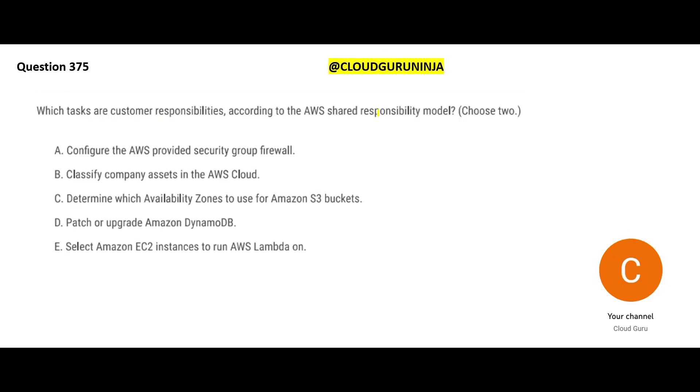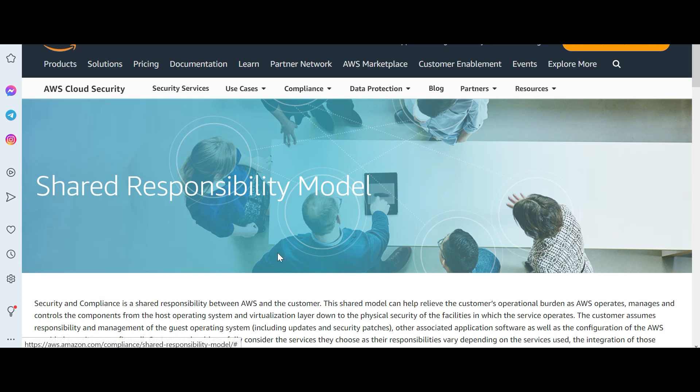Let us look at the questions: which tasks are customer responsibilities? We all know that AWS has a shared responsibility model. What does this model mean? It is just like a marriage — there is a husband and there is a wife, both of them share responsibilities. Similarly, at AWS as well as the customer, you have certain set of responsibilities and AWS has certain set of responsibilities. There are certain responsibilities which you as a customer would like to do but cannot, because of constraints — for example, maintaining the underlying hardware. You cannot even get into the data center, so you have that constraint.